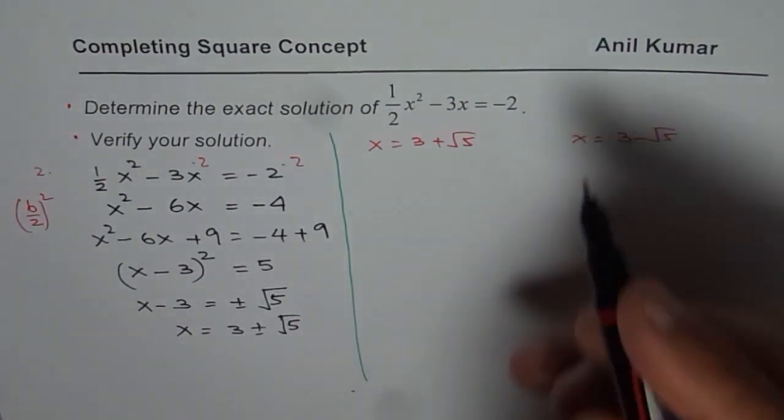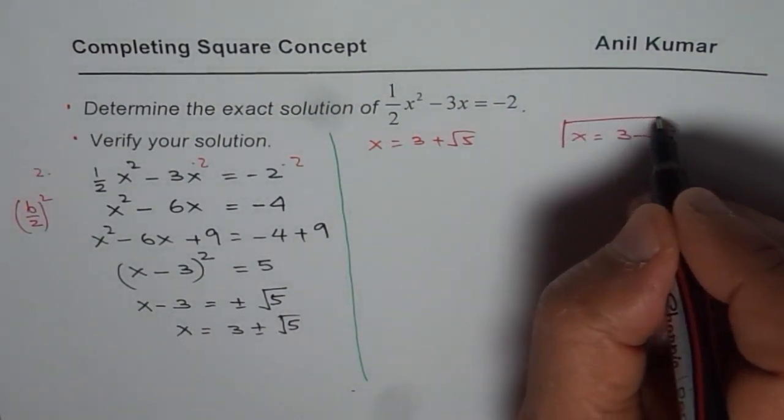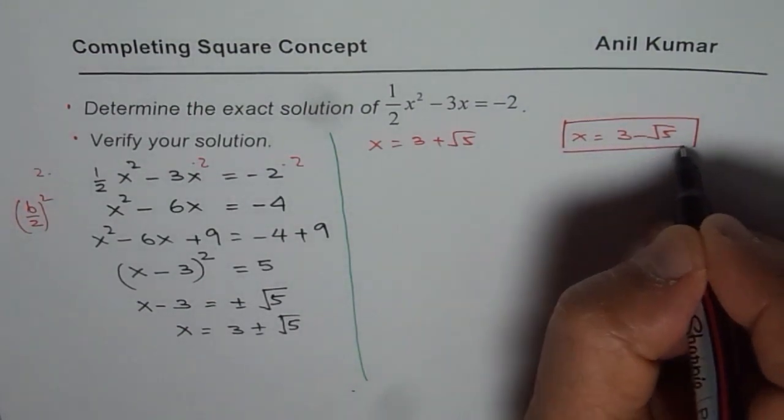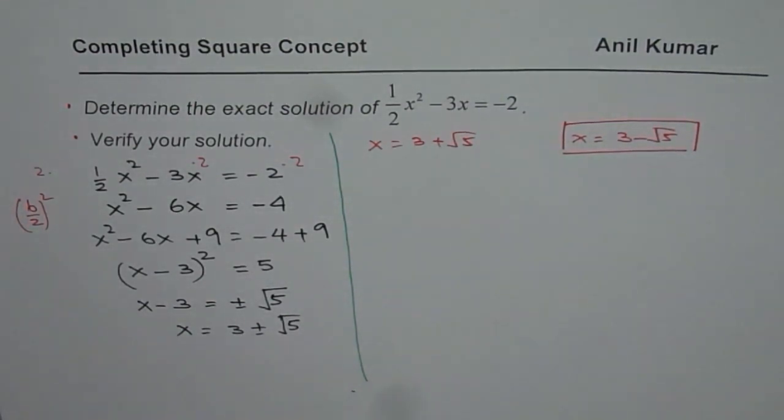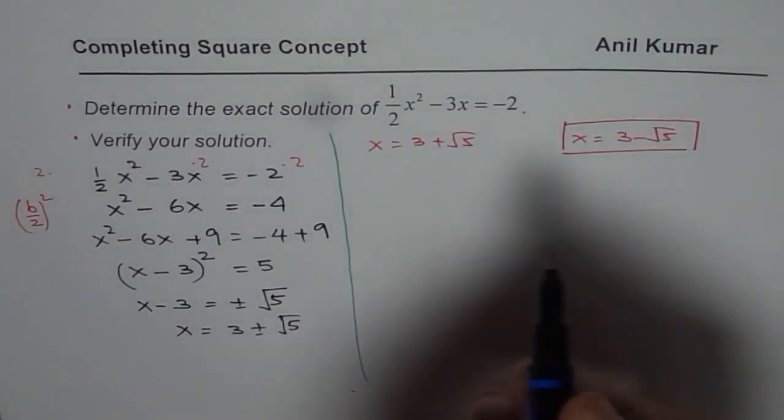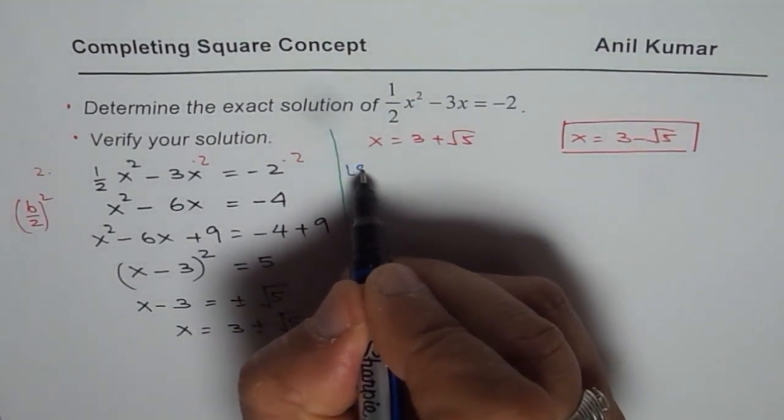So this time let me test with the value x equals to 3 minus square root of 5. So what I'll do is I'll substitute on the left side x equals to 3 minus 5. So let's begin with the left side.